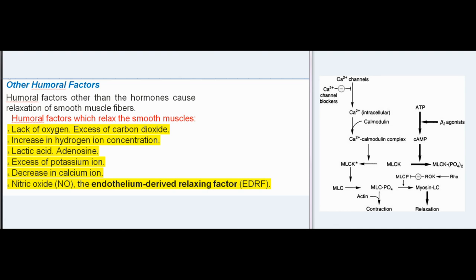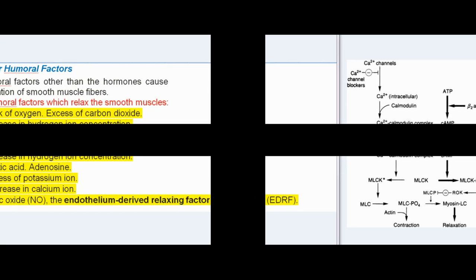Other humeral factors: humeral factors other than hormones cause relaxation of smooth muscle fibers. Humeral factors which relax smooth muscles include: lack of oxygen, excess of carbon dioxide, increase in hydrogen ion concentration, lactic acid, adenosine, excess of potassium ions, decrease in calcium ions, and nitric oxide (NO) — the endothelium-derived relaxing factor (EDRF).